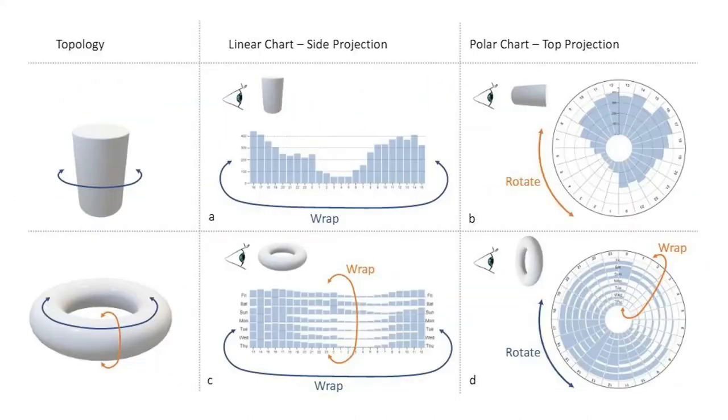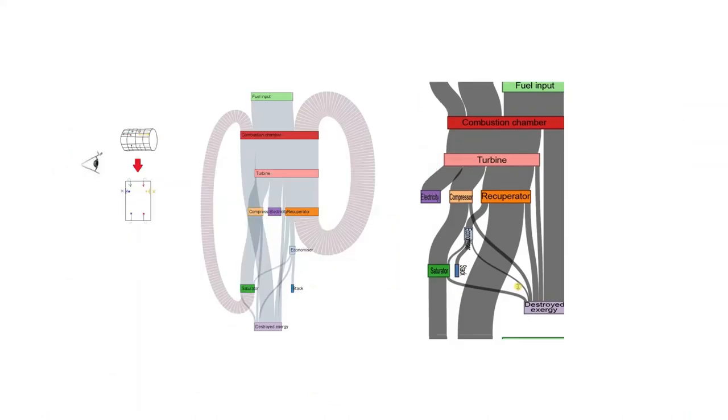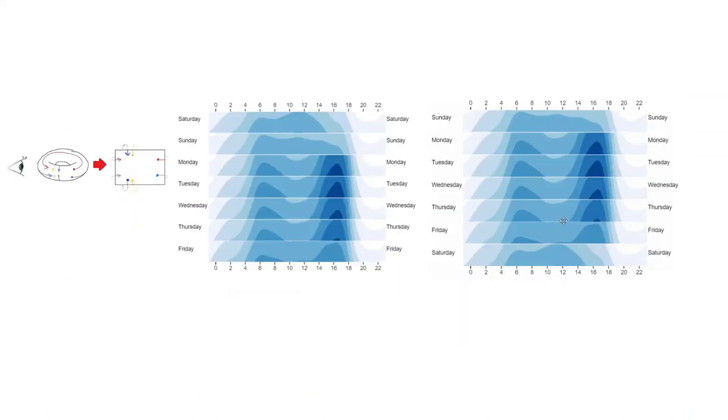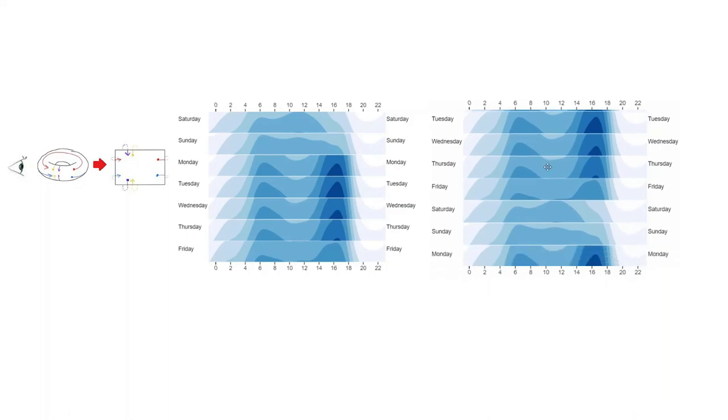We explore a design space for wrappable visualizations: cylindrical topologies for 1D wrapping, and radar for 2D wrapping.